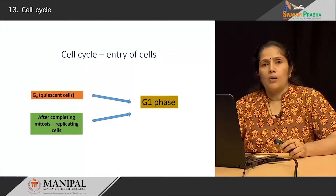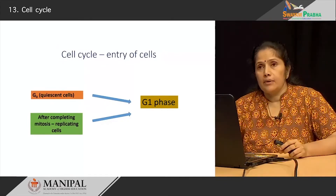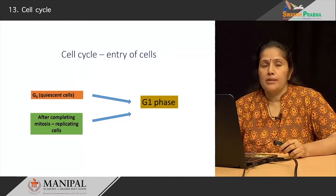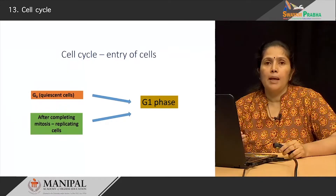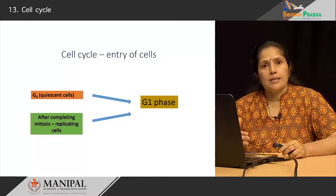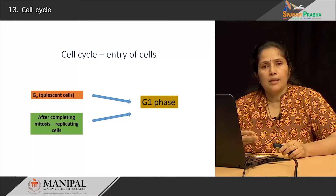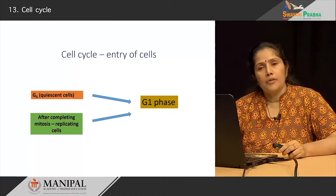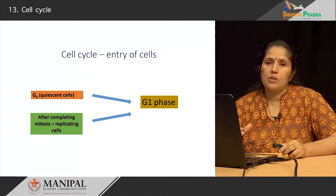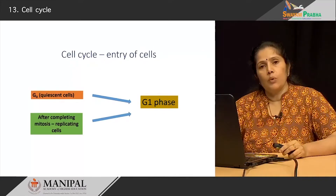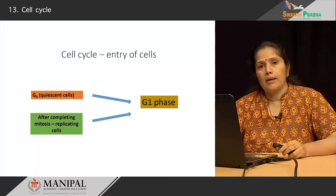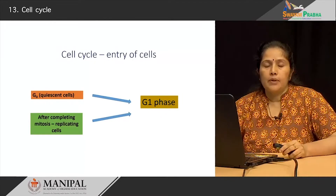How do cells enter the cell cycle? There are two types: cells which are quiescent and, in response to some injury, may enter the G1 phase; or a cell which is constantly dividing and after finishing one mitotic division will re-enter the G1 phase. Those are the two ways in which cells can enter back into the G1 phase.